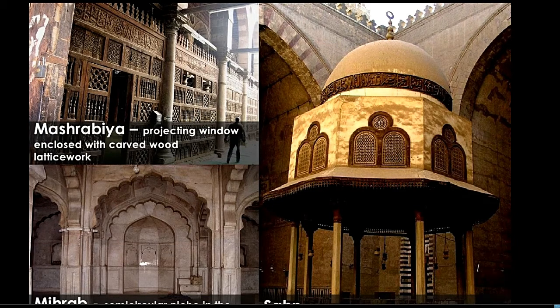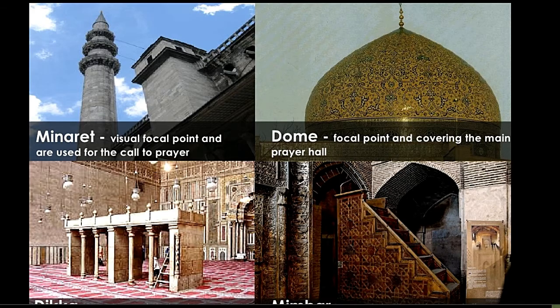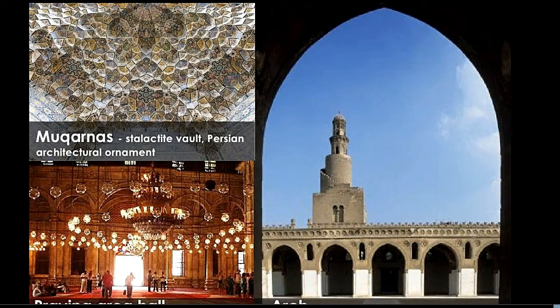Architectural features of the mosque: The mashrabiya is a projecting window enclosed with carved wood and latticework. The minaret is a visual focal point and is used for the call to prayer. The dome is the focal point and covering of the main prayer hall.